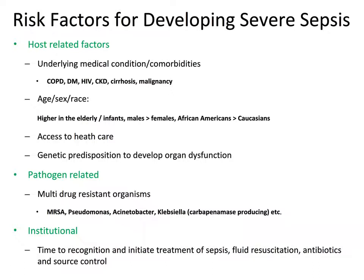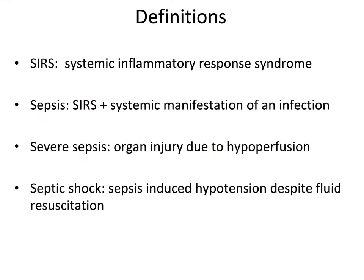There are also factors related to age, sex, and race — higher in the elderly and infants, males greater than females — as well as access-of-care issues, genetic predisposition, and pathogen-related factors. Multi-drug-resistant organisms such as MRSA and Pseudomonas are of particular concern. There are also institutional considerations, where patients seem to benefit from rapid recognition and treatment initiation with fluid resuscitation and antibiotics delivered in rapid fashion.